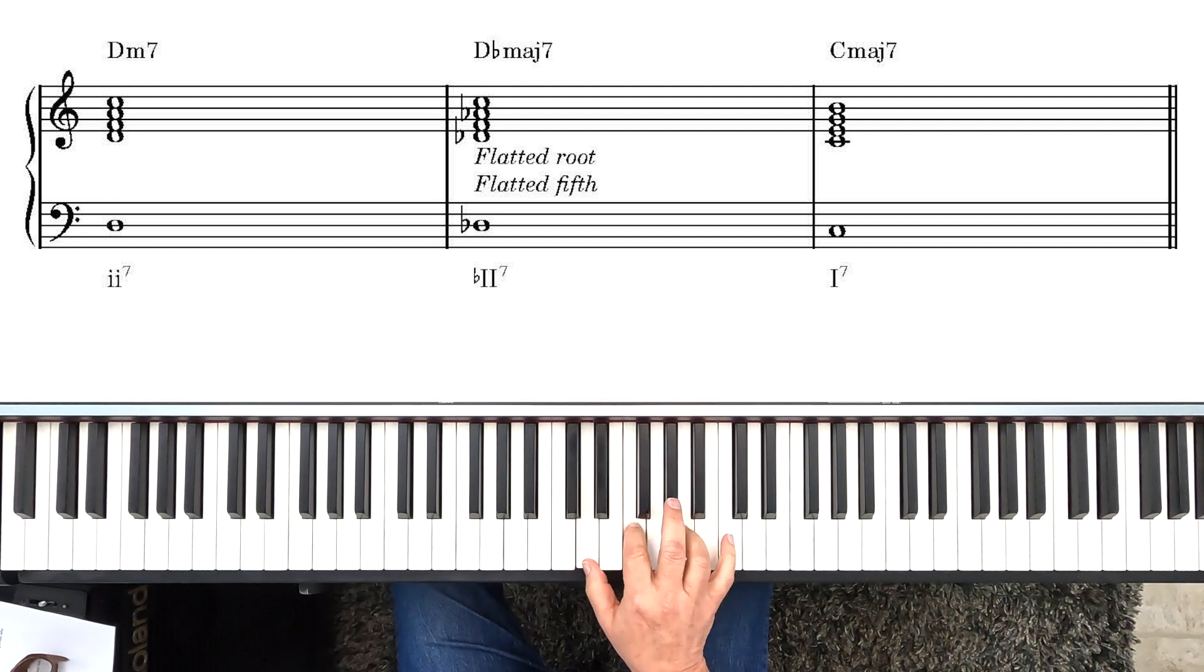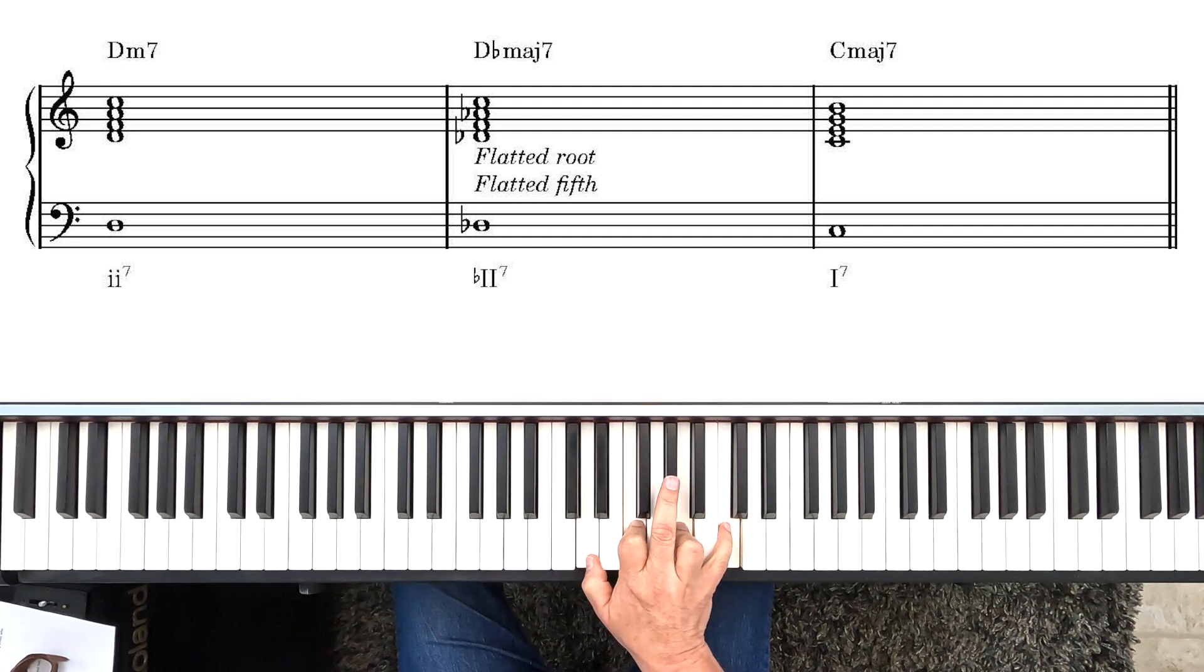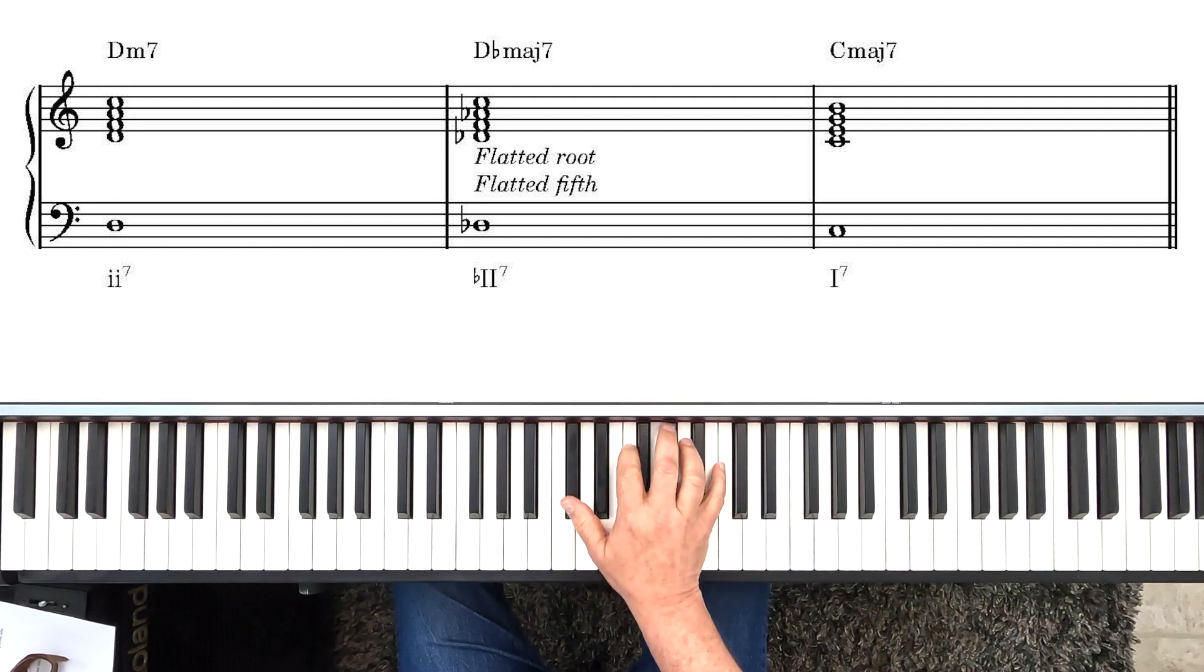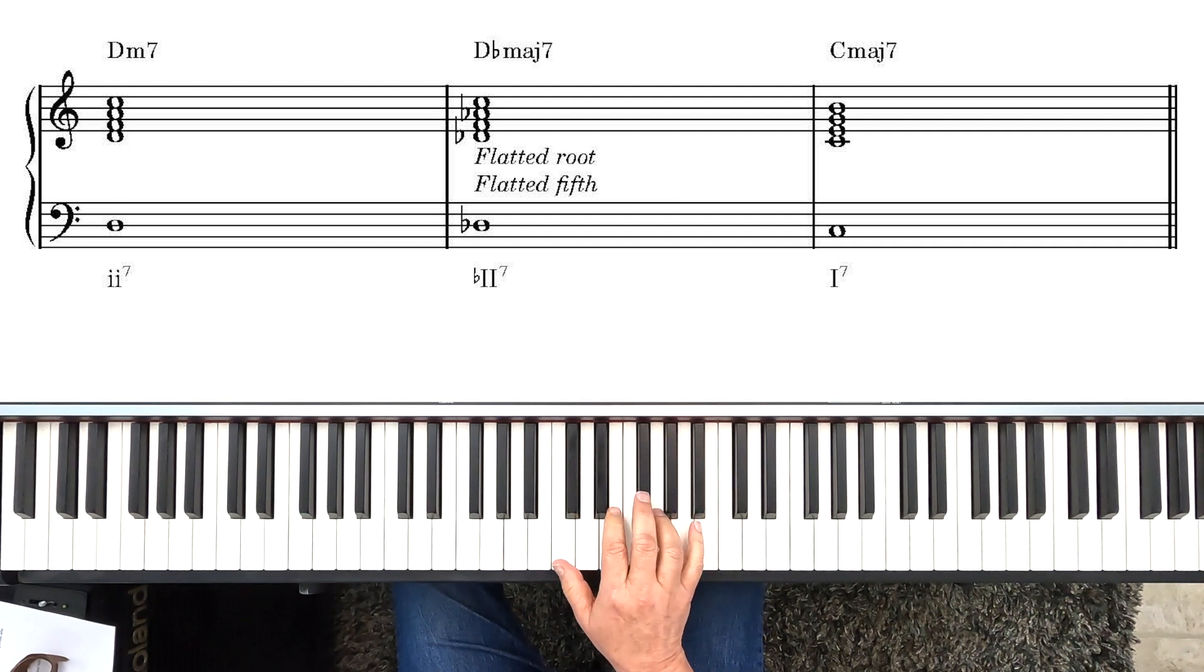And this leads us directly to C major 7. So you're going II7, which is a minor 7th chord. Now we have the flat II7, which is actually another major 7th chord. And then every note moves down a half step to C major 7.